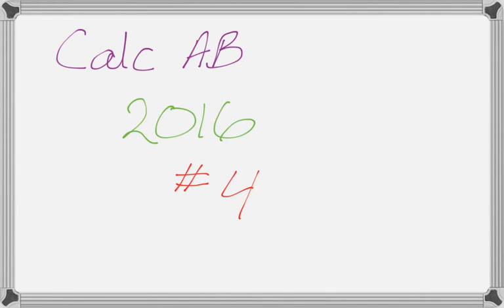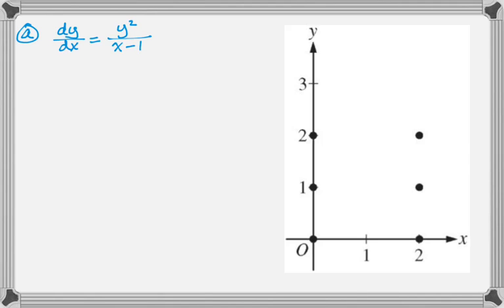Okay, in this video we're going to talk about number four from the 2016 Calc AB exam, and it's the differential equation problem. In part A, we know that dy/dx is y² over x minus one, and we are going to make a slope field.